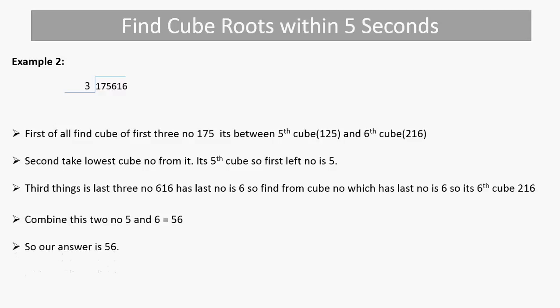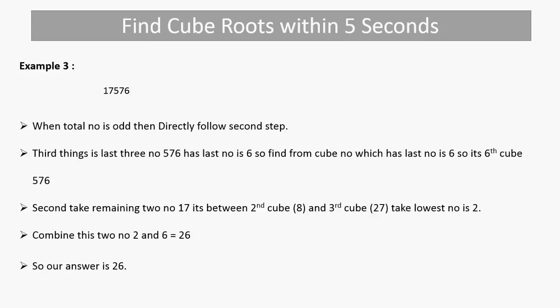Take another example: 17576. Take the last 3 numbers: 576. The last digit is 6, so which cube number has last digit 6? 6 cubed, so the last digit of the answer is 6. The first 2 digits are 17. Find which cubes it falls between: 2 cubed is 8 and 3 cubed is 27. Take the lowest number, which is 2. So the first digit is 2 and the last digit is 6 — our answer is 26.